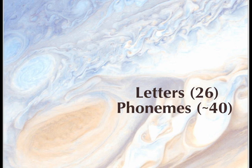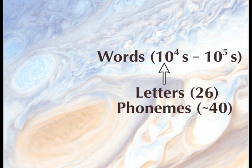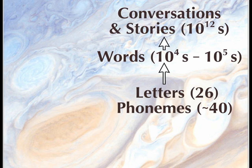If we take the structure of the English language — 26 written letters, or approximately 40 spoken phonemes, which are the basic units of language — we know that they build into words: tens of thousands to hundreds of thousands of words from these 26 letters or 40 phonemes. The words, in turn, can build into higher-order units: sentences, paragraphs, books, conversations, stories. It's absurd to put a number on it. Say everybody on Earth has a thousand stories — that's trillions right there.